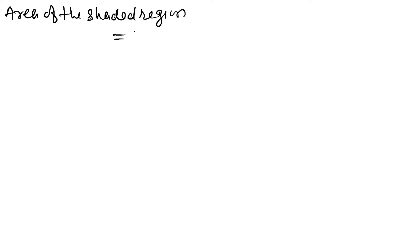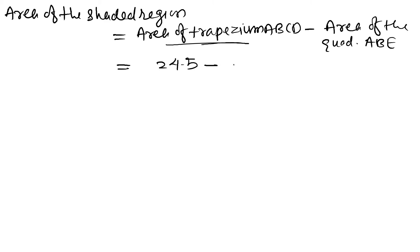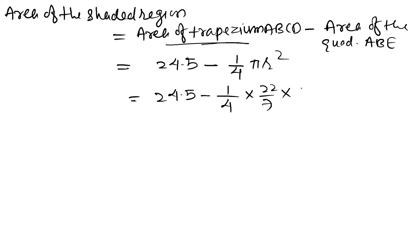Area of shaded region equals area of trapezium ABCD minus area of the quadrant ABE. So it equals 24.5 minus the quadrant formula (1/4)πr², which gives 24.5 minus 1/4 into 22/7 into radius (7/2) into (7/2).